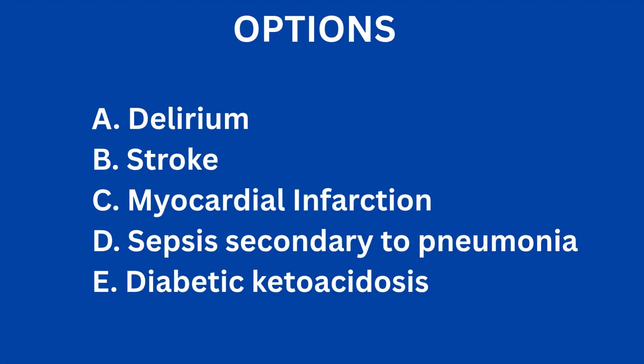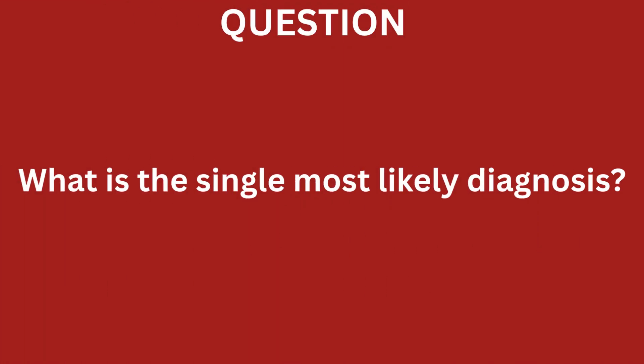Let's decode. Step 1 — the question: 'What is the single most likely diagnosis?' The keyword 'most likely' tells us to look for the unifying diagnosis that explains everything. Step 2 — sift for gold and noise. The history is full of noise: diabetes, hypertension, osteoarthritis, forgetfulness — these are red herrings designed to make you think about stroke or delirium. But the gold is in the vitals: fever, tachycardia, hypotension, and tachypnea. This is the classic SIRS criteria, pointing strongly towards sepsis. The productive cough gives us the source.